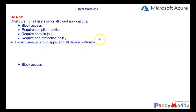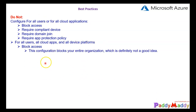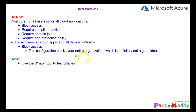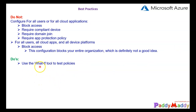Requiring compliant devices, domain join, or app protection policies across all users, all cloud apps, and all device platforms needs to be applied very carefully — blocking access in this way can lock your entire organization. One good practice is to use the 'What If' option in the UI to test whether a policy will grant or block access before applying it.